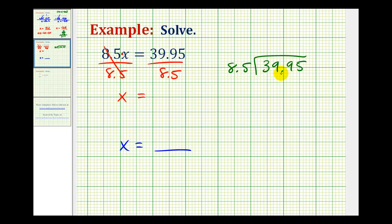When performing division involving a decimal, we want to make the divisor a whole number. So we move the decimal point to the right one place to make this 85. We can do this as long as we do the same to the dividend. We'll move the decimal point to the right one place here as well, and then up into our quotient.